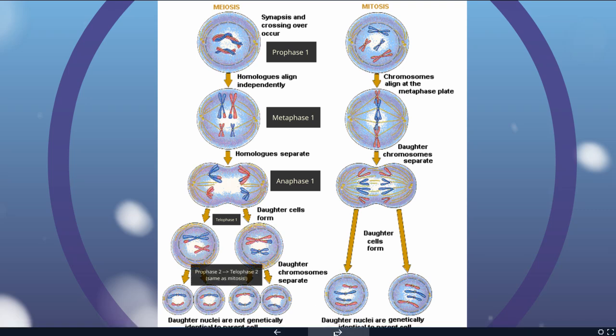In meiosis, we're going to go through an entire second set of cell divisions so that we end up with four cells instead of just two.